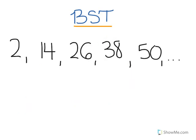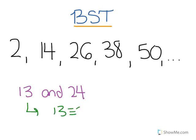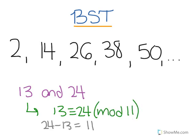Another example: 13 is congruent to 24 modulo 11, because the difference between them is divisible by 11. In a modulo 11 number system, where you're only using those 11 digits to represent all numbers, 24 and 13 are represented by the same number.